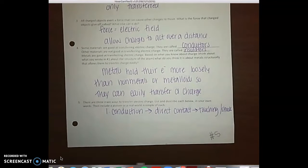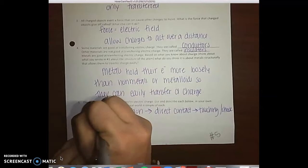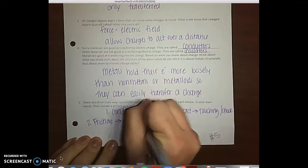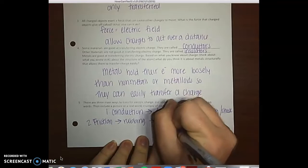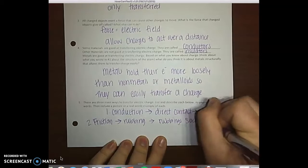So you touch somebody and you shock them, that's conduction. Number two is friction. It's caused by rubbing the object and it would be like rubbing your socks across carpet.